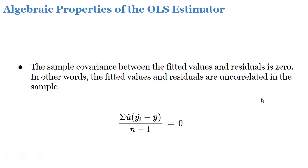The fourth property of the OLS estimator is that the sample covariance between the fitted value and the residual is always going to be zero — the fitted value and the residual are not correlated. We express this as: summation of û multiplied by (ŷ_i minus ȳ), divided by (n minus one), equals zero.